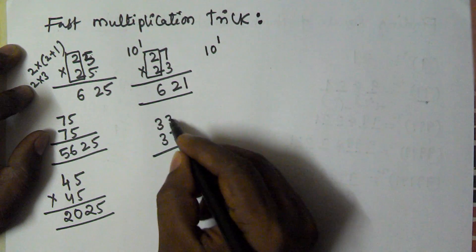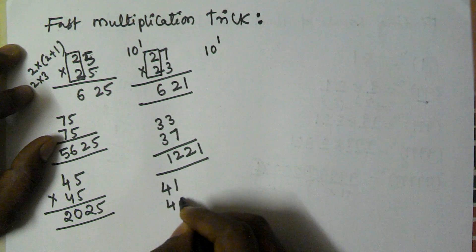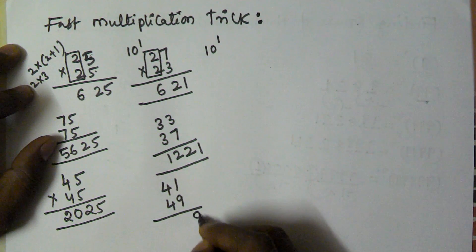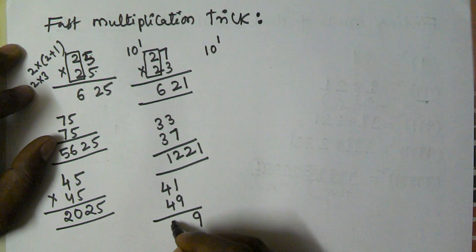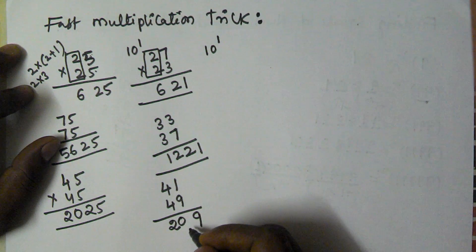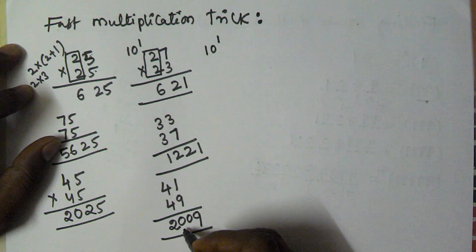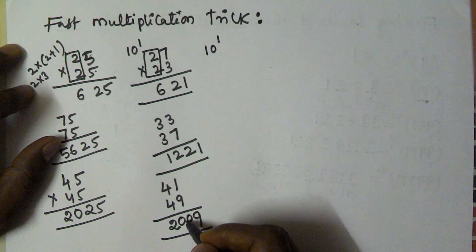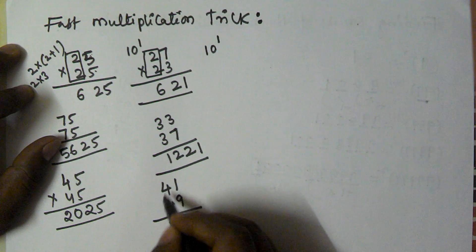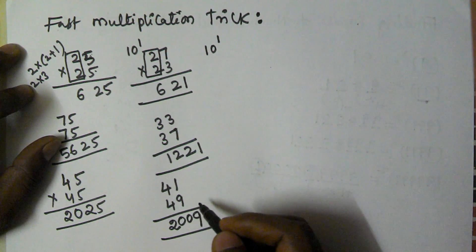Next, 41 into 49: 9 into 1 is 9, and 4 into 5 is 20. But we have to use an extra zero here — because 41 into 49 needs three digits in the right part. So we put an extra zero, making the answer 2009.